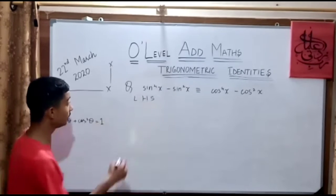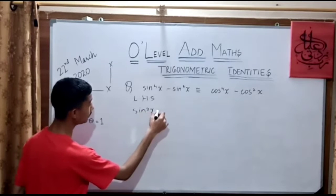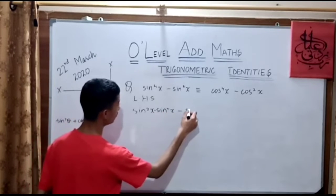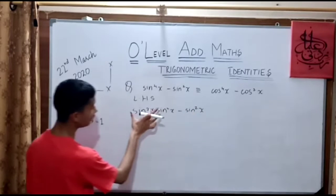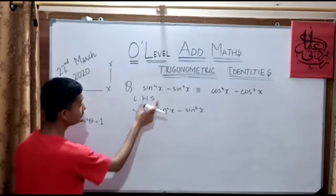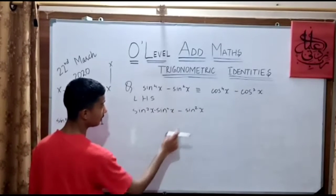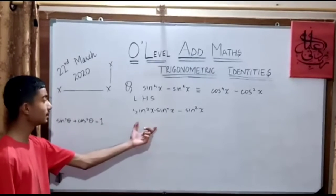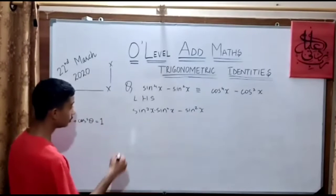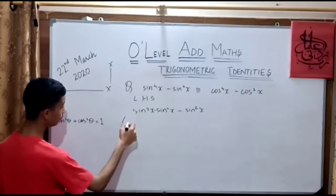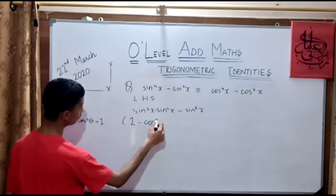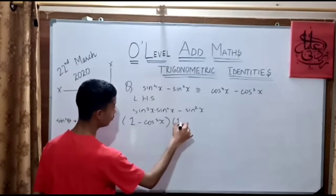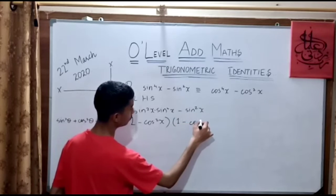Sin to the power 4x means sin squared x, squared — that is (sin²x)² — minus sin squared x. We have chosen just the left hand side, so we are solving for the left hand side. Now for sin squared theta, we are going to put 1 minus cos squared x, because here theta is replaced by x. And for this sin squared theta we also put 1 minus cos squared x.